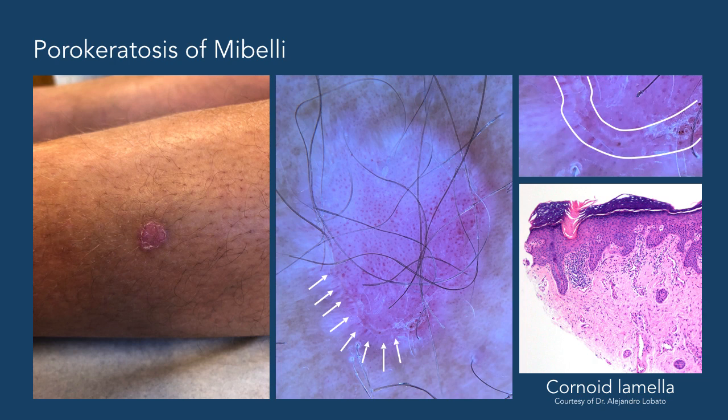In the central dermoscopic image, the keratin rim is pointed out by the white arrows. In the upper right-hand corner, the keratin rim has been magnified and can be seen between the white lines.